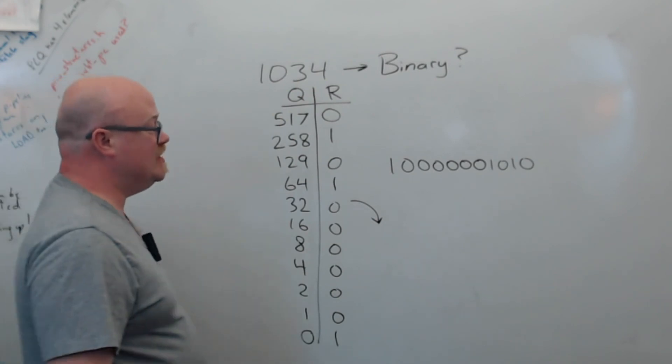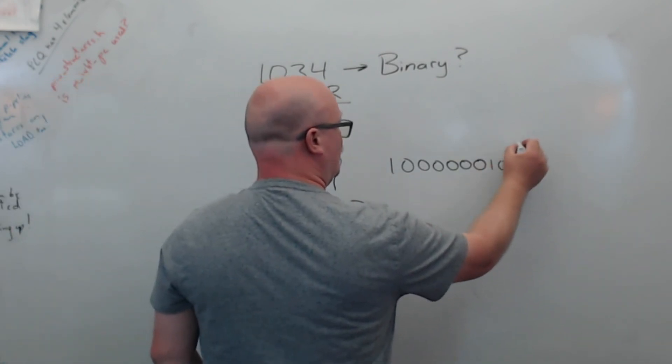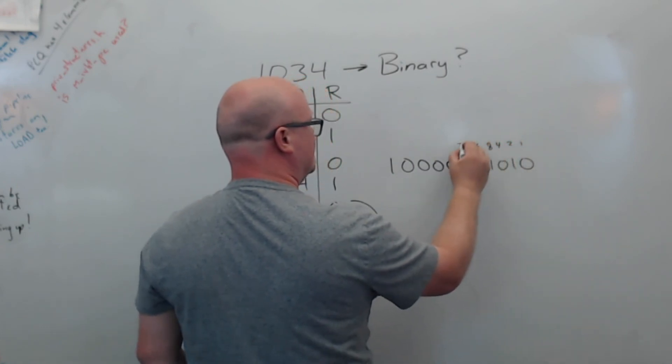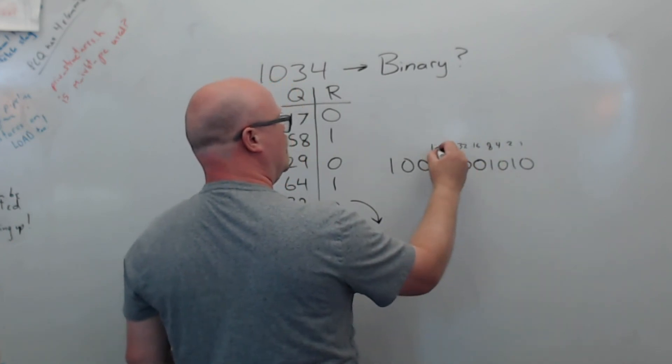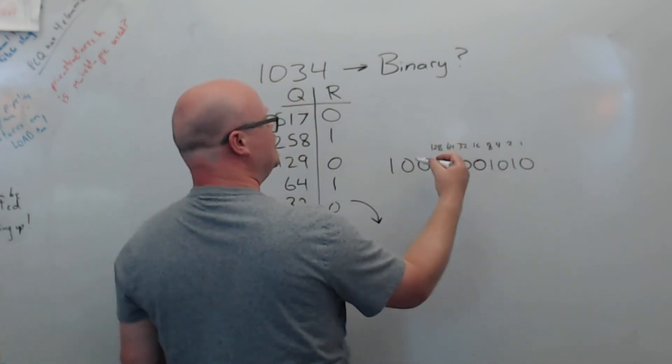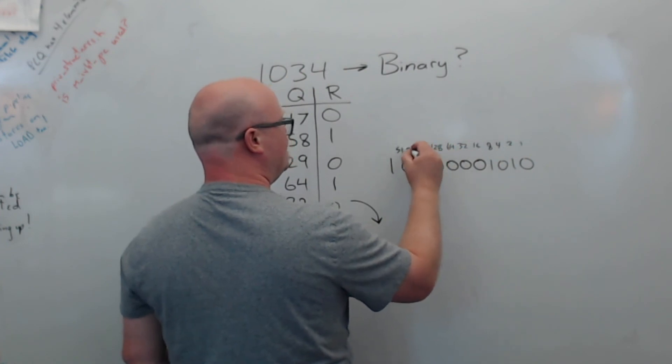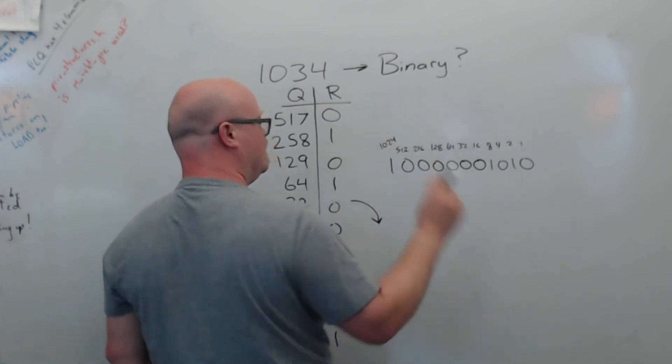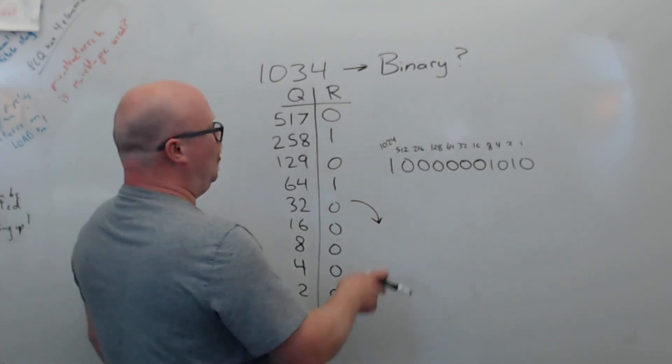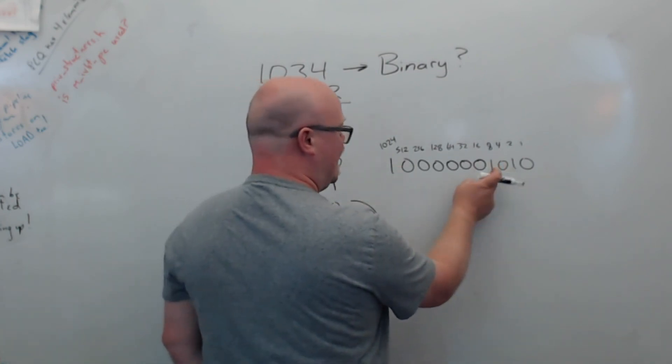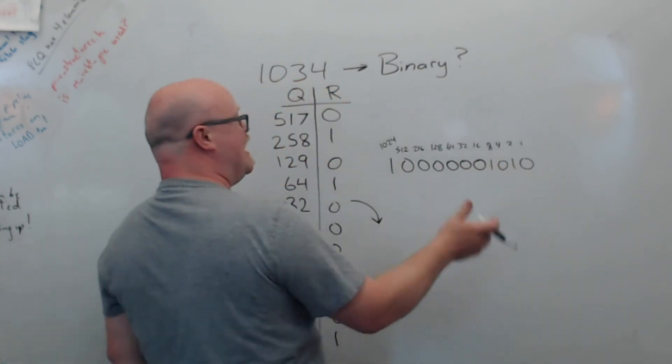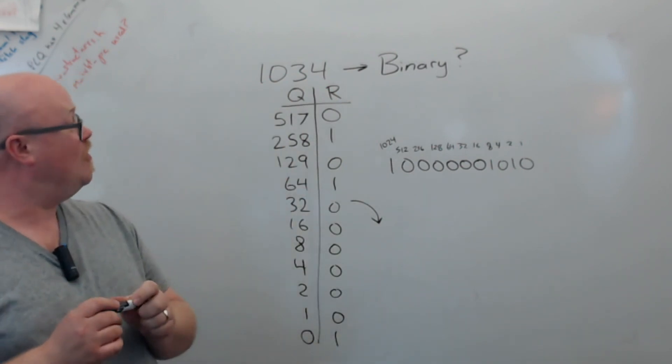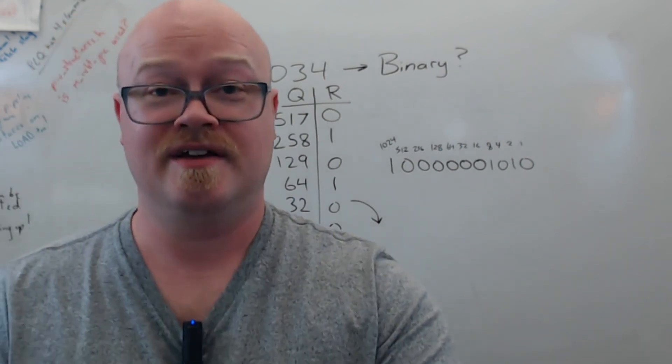But we'll go ahead and double check it to make sure we did this right. This position is worth 1, then 2, 4, 8, 16, 32, 64, 128. I'm just multiplying by 2 as I move along. So 256, 512. And the last one is 1,024. So we've got 1,024 plus 8 plus 2. This is 10. 1,024 plus 10 is 1,034. And that's how you convert decimal numbers to binary.